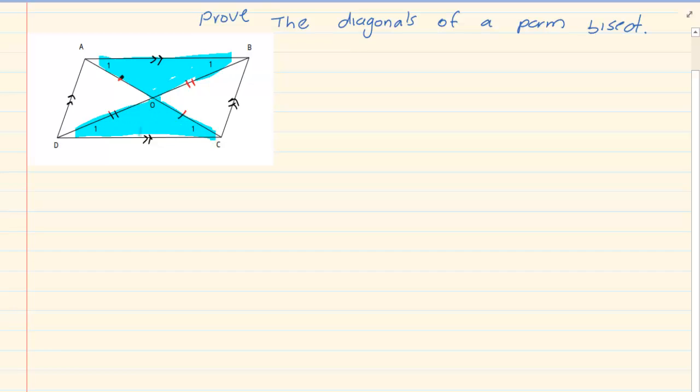Remember, when you are proving this, you can use any other proof or any other quality related to a parallelogram. Now, if you look at these two triangles, triangle ABO and triangle ODC,